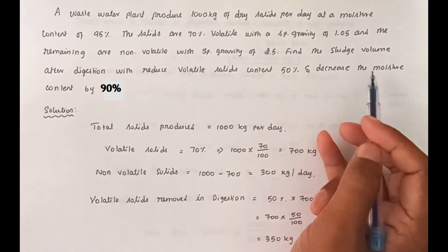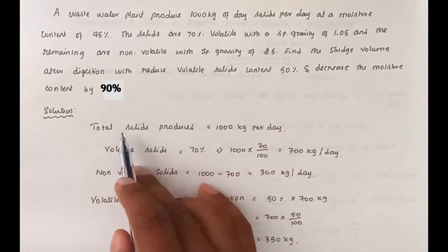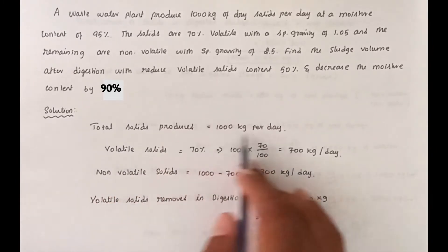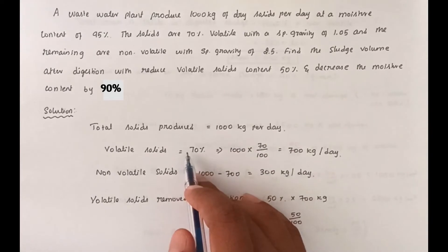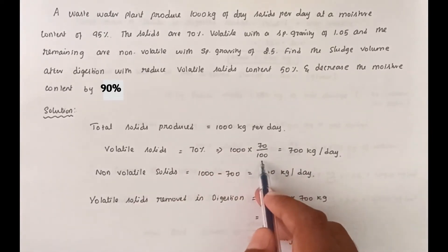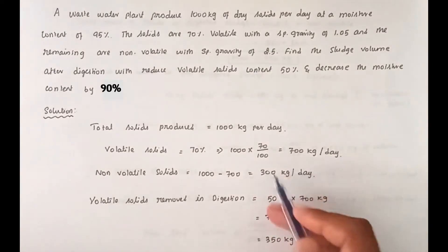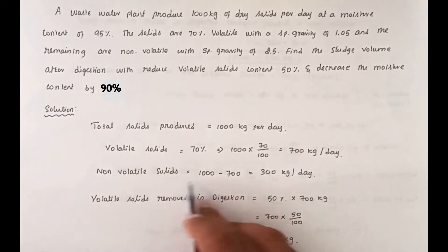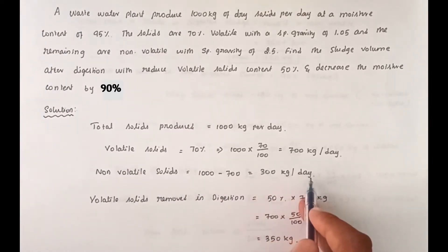The solution: 1000 kg of total solids are produced. Of this 1000 kg, 70% volatile solids = 1000 × 70/100 = 700 kg per day. The remaining non-volatile solids = 1000 − 700 = 300 kg per day.